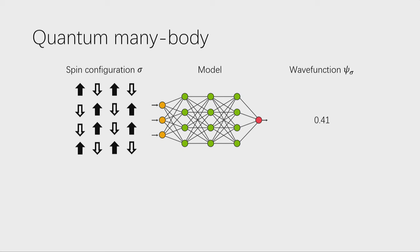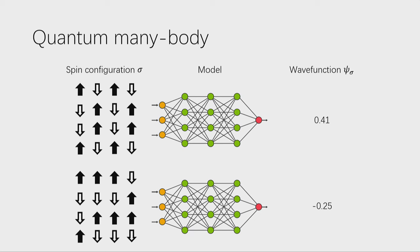We take the output as the wave function psi. For different spin configurations, it gives us different wave function outputs, and the whole quantum state is constructed in this way. There is a key difference in the quantum many-body problem: the wave function is not always positive — it can also be negative. This is quite different from traditional machine learning tasks where we only learn a probability distribution. Here, we also need to learn the signs, which is called the sign problem in quantum systems. This is a very fundamental problem, and I will discuss it later.